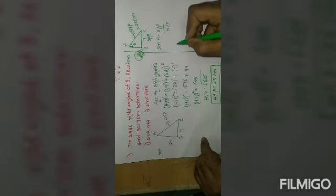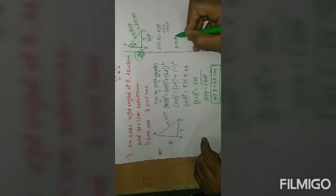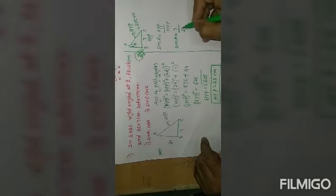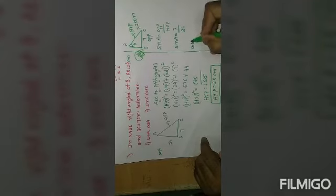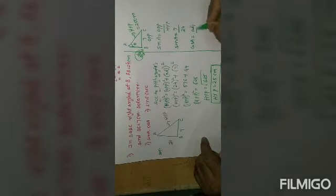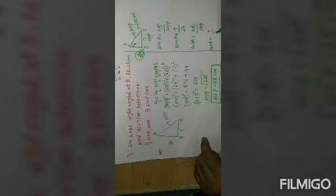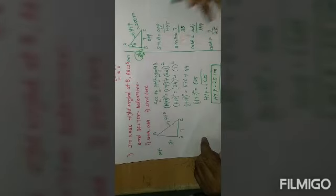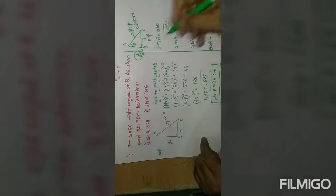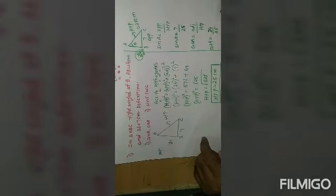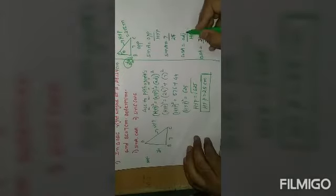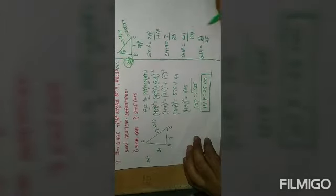So sine A equals opposite by hypotenuse, that is 7 by 25. Then cos A equals adjacent by hypotenuse. The adjacent value is 24, so cos A equals 24 by 25.